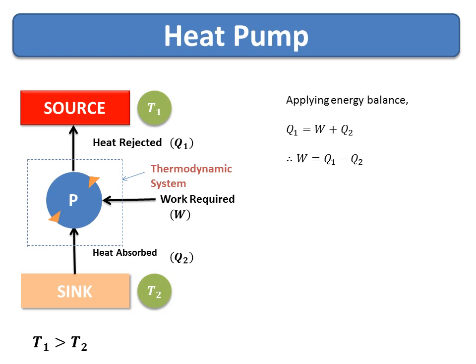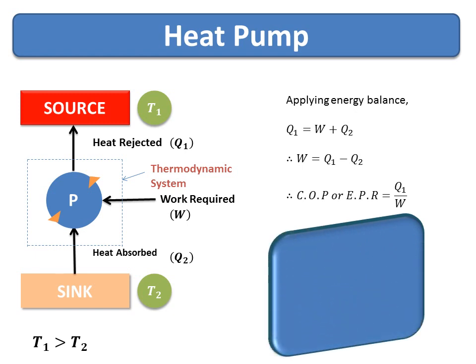Applying the energy balance for the heat pump: W and Q2 are coming into the system, so W plus Q2 equals Q1, and W equals Q1 minus Q2. The coefficient of performance, or energy performance ratio, for the heat pump is output divided by input, which equals Q1 divided by W.